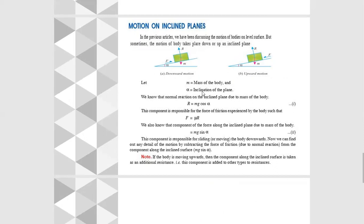Let m = mass of body, α = inclination of plane. We know the normal reaction on the inclined plane due to mass of body equals R = mg cos α. This component is responsible for the force of friction experienced by the body such that f = μR.